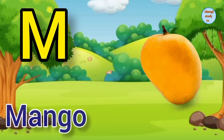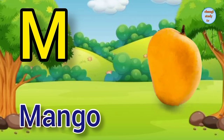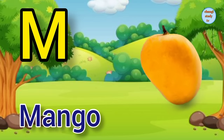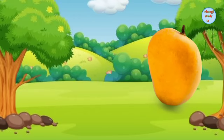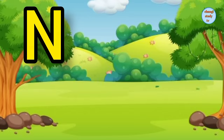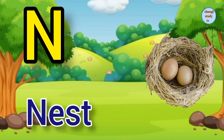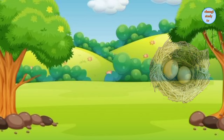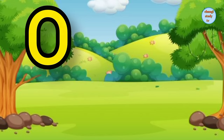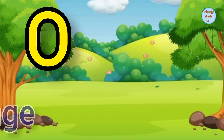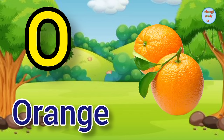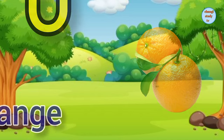M. M for mango, mango means aam. N. N for nest, nest means ghosla. O. O for orange, orange means santara.